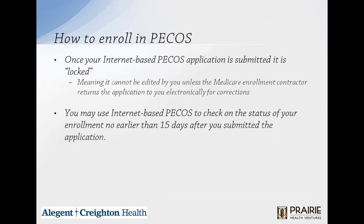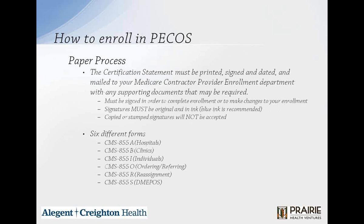Once your internet-based PECOS application is submitted, it's considered locked, meaning it cannot be edited by you unless the Medicare enrollment contractor returns the application to you electronically for corrections. You may use internet-based PECOS to check on the status of your enrollment no earlier than 15 days after you submitted the application. In the paper process, the certification statement must be printed, signed, and dated and mailed to your Medicare contractor's provider enrollment department with any supporting documents required. It must be signed in order to complete enrollment or to make changes, and the signatures must be original and in ink.